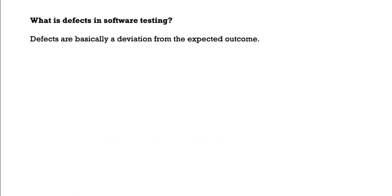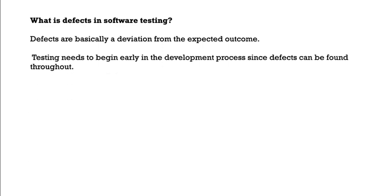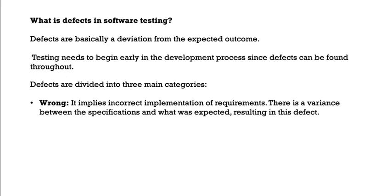What are defects in software testing? Defects are basically a deviation from the expected outcome. Testing needs to begin early in the development process since defects can be found throughout — they are not mandatory to be found only in the testing phase. Defects are majorly divided into three main categories. The first is wrong requirement specification, which implies incorrect implementation of the requirement, where there is a variance between the specification and what was expected.